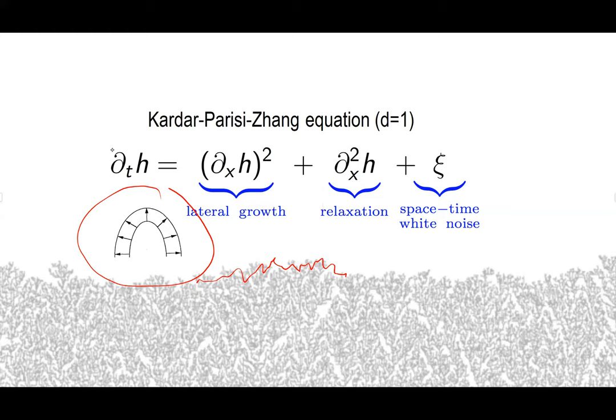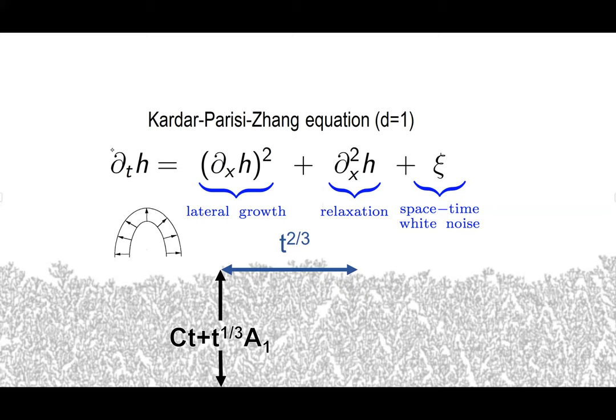H can also be written as the log of the multiplicative stochastic heat equation, and that one can be defined using classical Itô calculus. What we're supposed to see in the KPZ equation is the same thing we saw in the ballistic aggregate: the fluctuation should be of size T to the one-third. Here, from the picture, we started with a flat interface, so the fluctuation process is again supposed to be the Airy-one process.